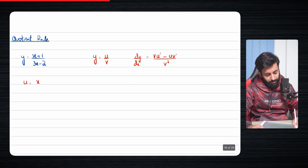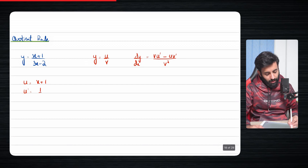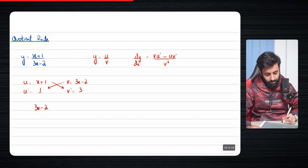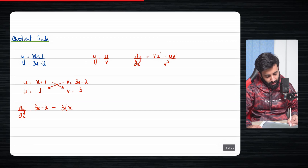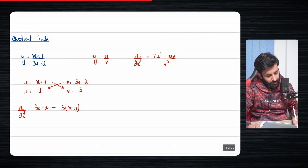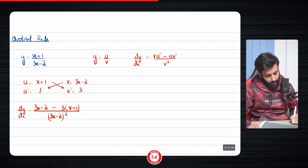Let's do an example. Let u equal x plus 1, so u prime is just 1. And v equals 3x minus 2, so v prime is 3. Now v u prime means 3x minus 2 times 1, which is just 3x minus 2. So dy by dx equals 3x minus 2 minus u v prime, which is minus 3 times x plus 1, all over v squared, which is 3x minus 2 the whole thing squared.